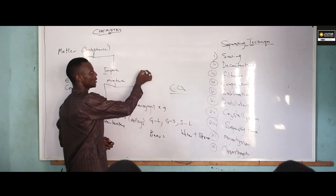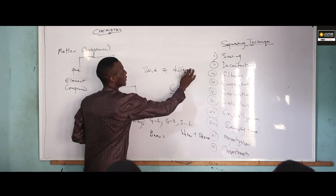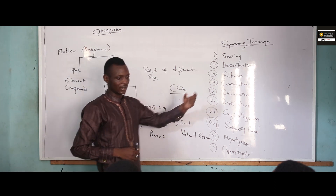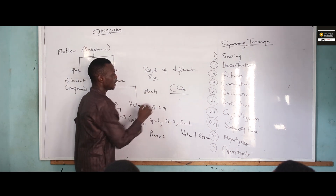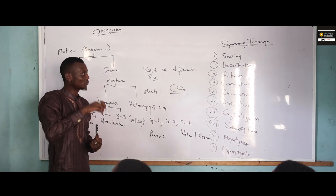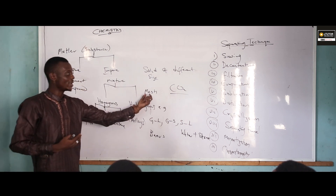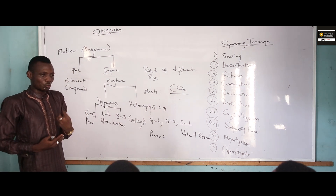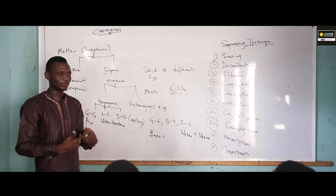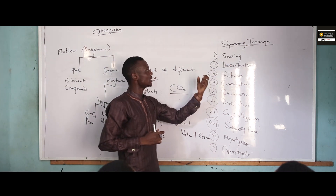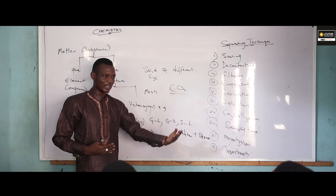Since we are having rice and beans, which are solids of different sizes, you can simply use sieving. In sieving, there is something you normally use — we call it a mesh. The function of that mesh is to allow the smaller particles to pass through and hold the bigger ones behind. The rice passes through and the beans are held behind. This is sieving, majorly used in the garri industry and mining of gold in West Africa.